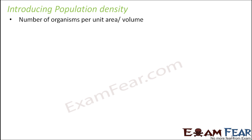Population density is how many organisms per unit area or per unit volume is present. Many times, defining population becomes a very tedious task because measurement of population is not very easy. For example, what is the population of bacteria in a culture dish? It is very difficult to count the number of bacteria. So we measure population using population density — we calculate the number of bacteria in a very small area and say that these many bacteria per unit area is the population density.